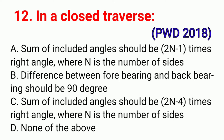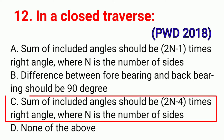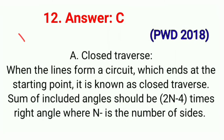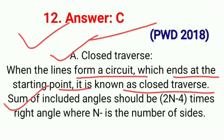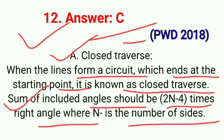Question No. 12. In a closed traverse, correct option C: Sum of included angles should be (2n − 4) times right angles, where n equals number of sides. A closed traverse is when a line forms a circuit which ends at the starting point. Sum of included angles should be (2n − 4) times right angles, where n equals number of sides. Correct option C.